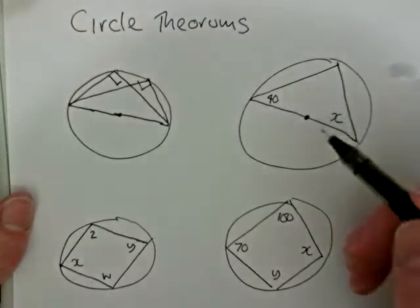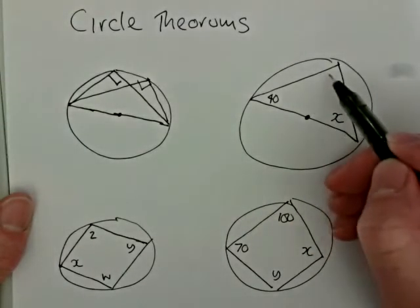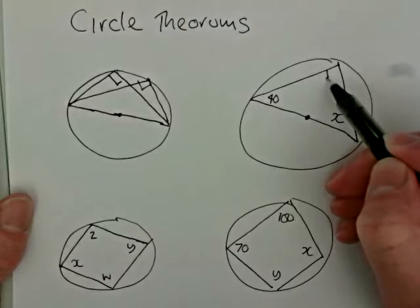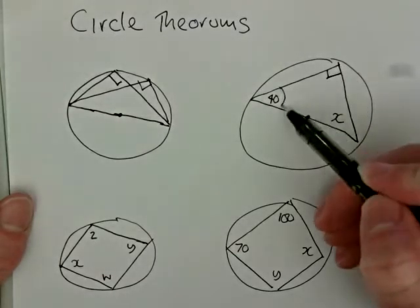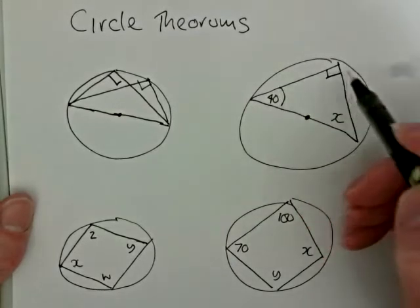So if we're given a problem that involves the semicircle, then as long as we remember that this angle is 90 degrees, then we only need one of the other angles to find all three. So we've got 40 degrees here, 90 there.